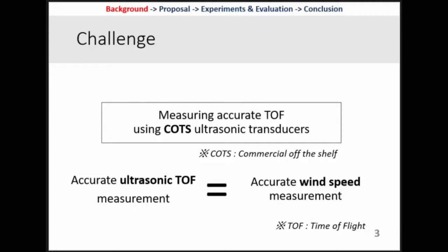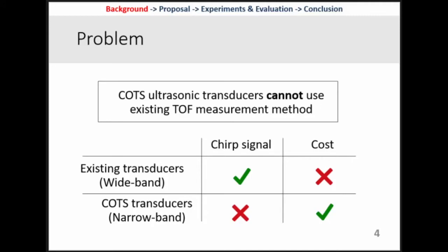Our challenge is measuring accurate TOF using COTS ultrasonic transducers for cutting costs. When we can measure the accurate ultrasonic TOF, we can achieve accurate wind speed measurement. However, there is a problem using COTS ultrasonic transducers: they cannot use the existing TOF measurement method. The existing TOF measurement method is cross-correlation using the chirp signal. A chirp is a signal which changes frequency with time, and chirp needs frequency bandwidth.